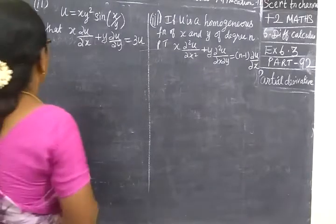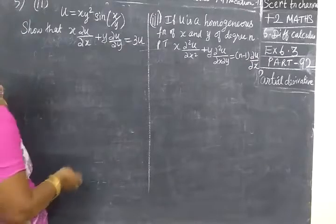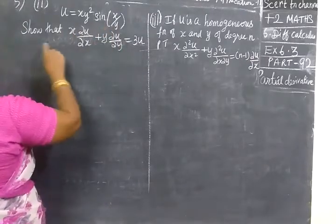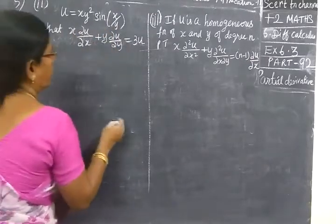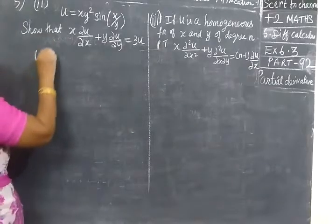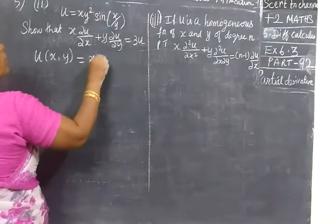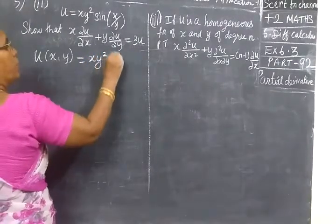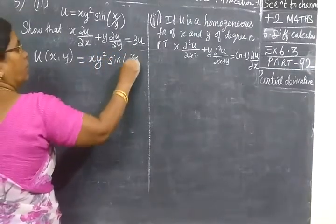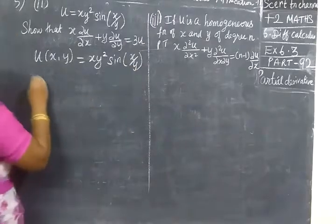Now, we do part 92. With the second sum, u equal to given, show that this equal to 0. The question here: u of xy equal to xy square sin xy equal to 0.